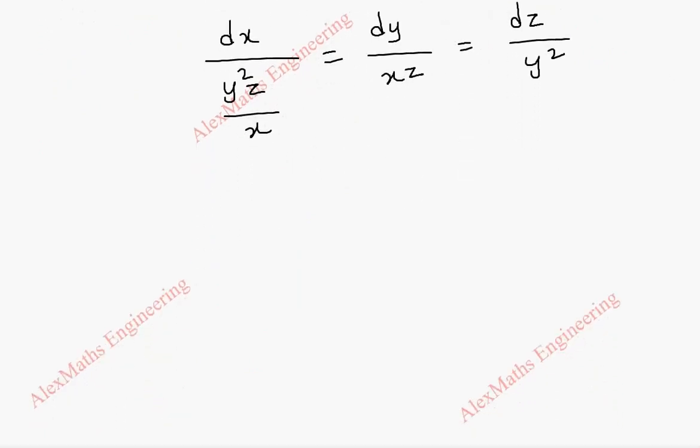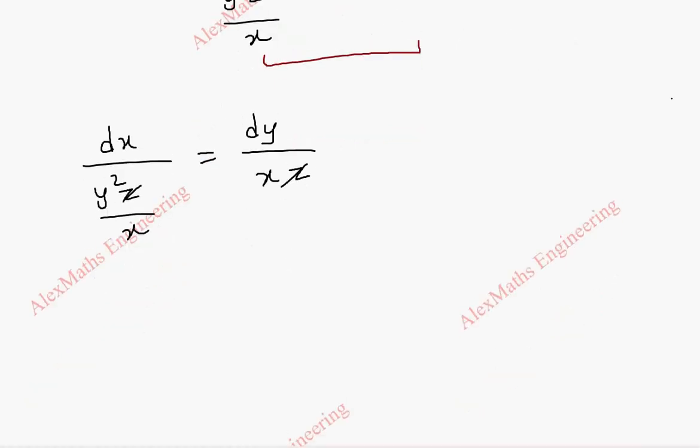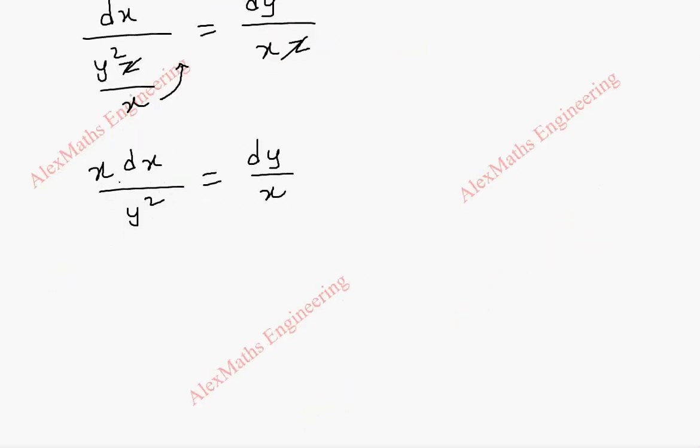Now, taking first two terms at a time, we are going to get a solution. That is, dx by y square z by x equal to dy by x, z. We can cancel both the sides z and this x will be carried to the numerator. So, x dx by y square equal to dy by x. And by cross multiplication, this x will be multiplied here. We get x square dx equal to y square dy.